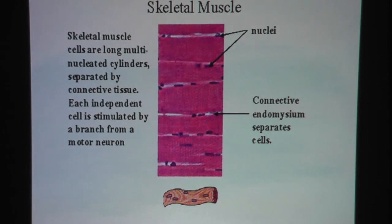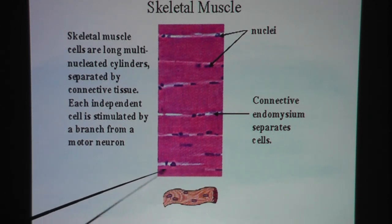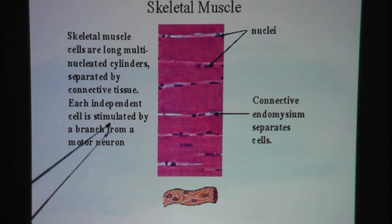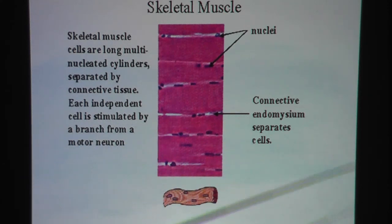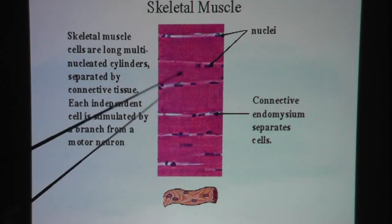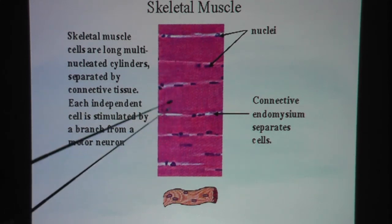Here you have another glimpse of skeletal muscle tissue. As you can see, these are long muscle fibers that run parallel to each other. Perpendicular to the length of the muscle fibers are the striations — these stripes.